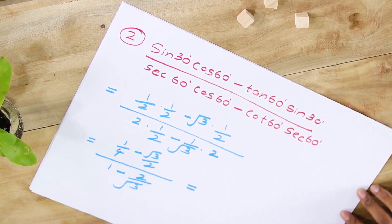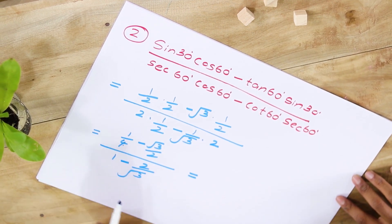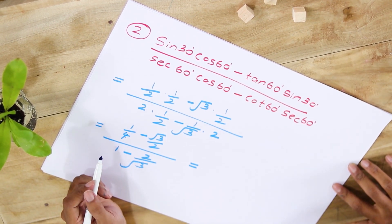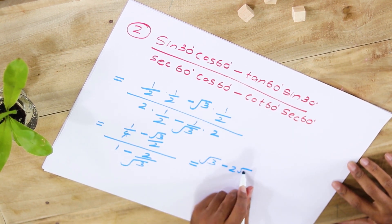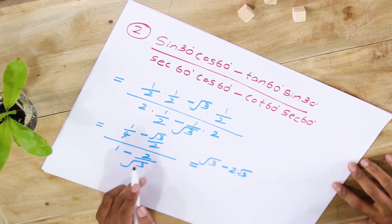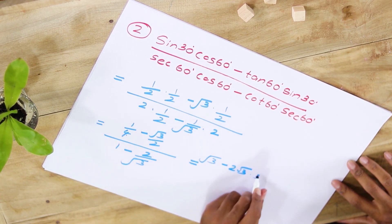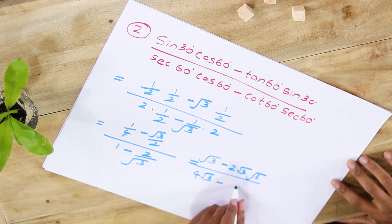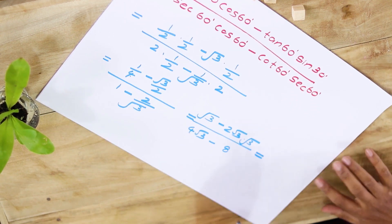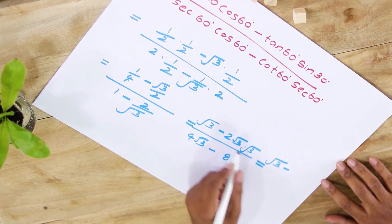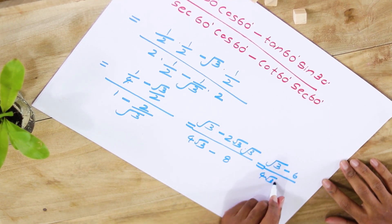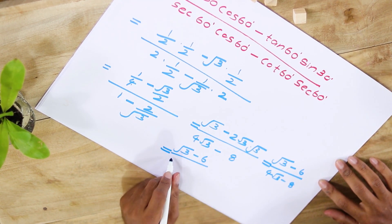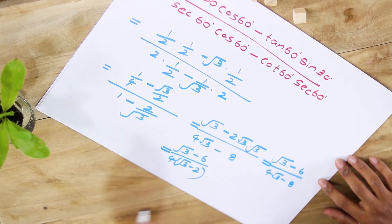To simplify this complex fraction, we multiply both numerator and denominator by 4√3. The reason is that the numerator contains a 4 and the denominator contains a √3, so multiplying by 4√3 clears both. After multiplying the numerator by 4√3: we get √3 − 2√3·√3 = √3 − 6. After multiplying the denominator by 4√3: we get 4√3 − 8, which factors as 4(√3 − 2). So the expression becomes (√3 − 6) / [4(√3 − 2)].